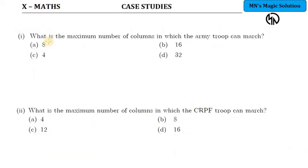The first question is, what is the maximum number of columns in which the army troop can march? How many columns maximum can they march, so that in every column the same number of people are there. Okay. So this is the number of people.